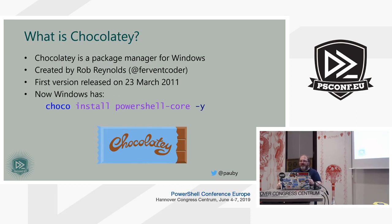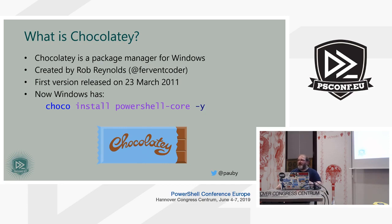Chocolatey was created by Rob Reynolds in March 2011 — that's when the first version was released. So it's not a flash in the pan; it's been around for over eight years. Some of you may know Rob — his Twitter handle is Fervent Coders. To install PowerShell Core from Windows now, you do choco install powershell-core -y, and there it is, all silently installed. To upgrade it, you just replace install with upgrade and off it goes.